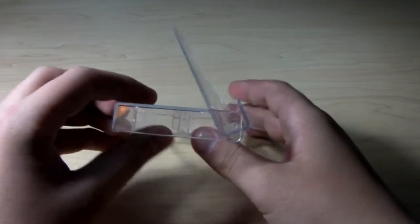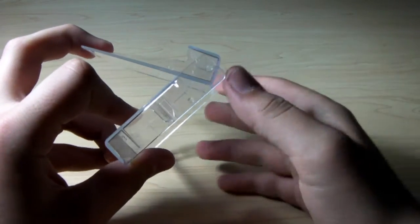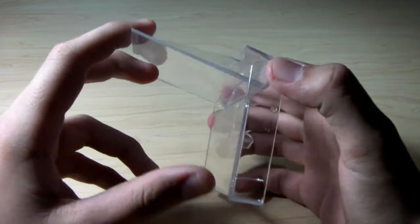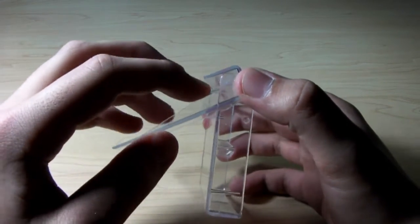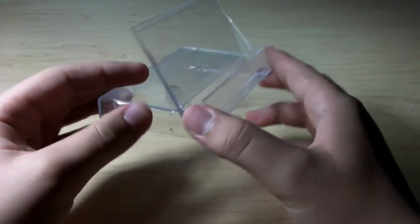So that step is optional if you want to round the edges around here with a file or some sandpaper, or something that can basically just grind it so it's round here and fit your iOS device, iPhone or iPod Touch, a little bit better.